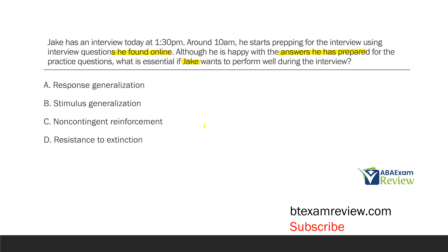What about C, non-contingent reinforcement? Jake isn't going to perform non-contingent reinforcement — Jake needs to engage in the response and generalize those answers across a bunch of different stimuli. And D, resistance to extinction — Jake's behavior isn't necessarily going to be on extinction. We know they're going to ask him questions, he's going to answer, and they'll give feedback. Resistance to extinction doesn't really apply. What we need Jake to do is take those answers he's prepared and generalize them with the new stimuli he's going to encounter.